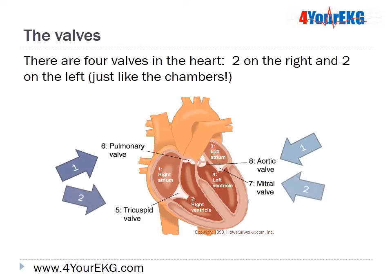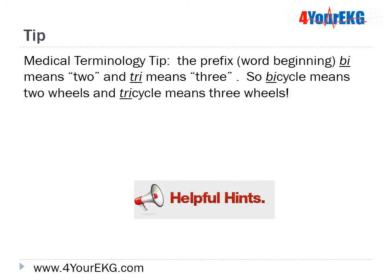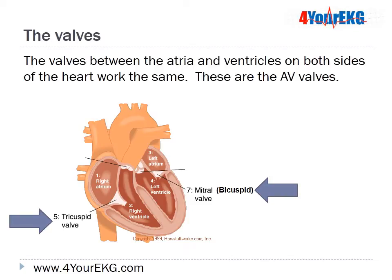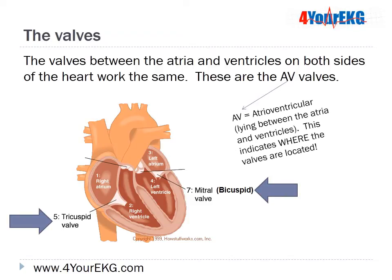There are just four valves in the heart — two on the right and two on the left, just like the chambers. Here's a helpful hint: the prefix 'bi' means two and 'tri' means three. A bicycle has two wheels and a tricycle has three wheels. The valves between the atria and ventricles on both sides of the heart work the same and are called AV valves, or atrioventricular valves, because they lie between the atria and ventricles.